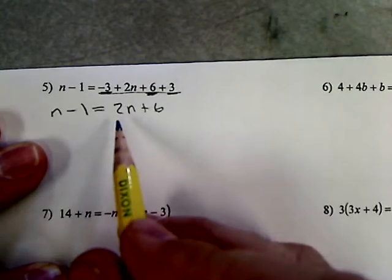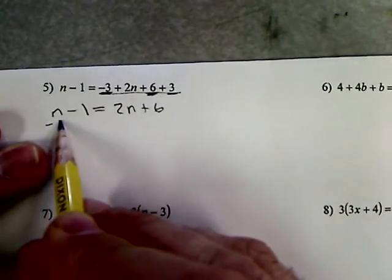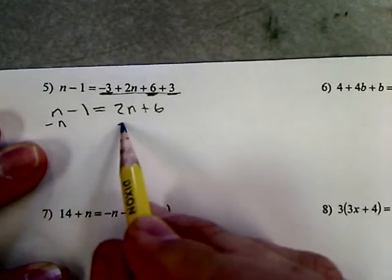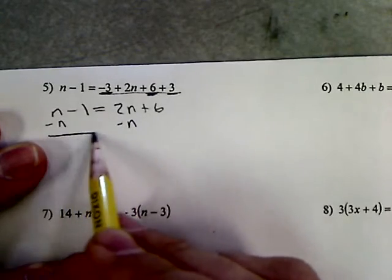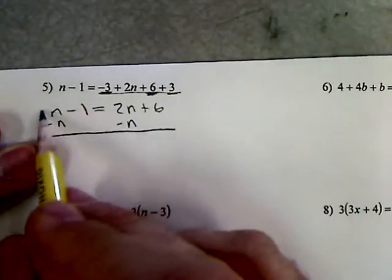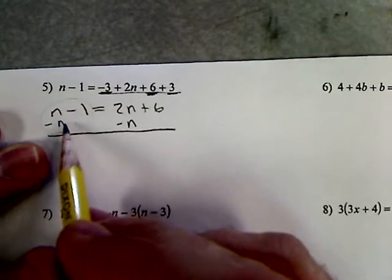We get all the n's on one side. So I'm going to subtract n. That will get rid of that positive n and do it on each side of the equal sign. So when I combine like terms on this side, he's gone, that's why I did it.